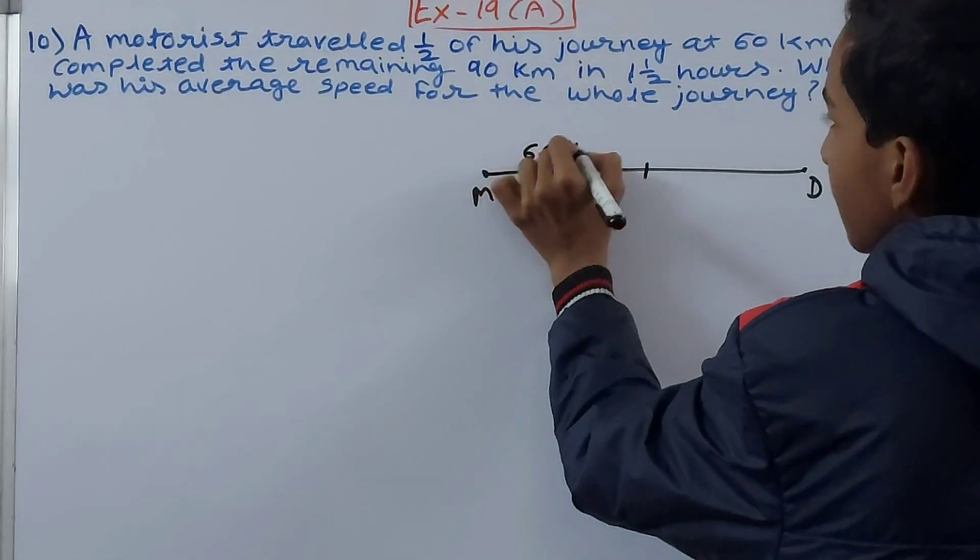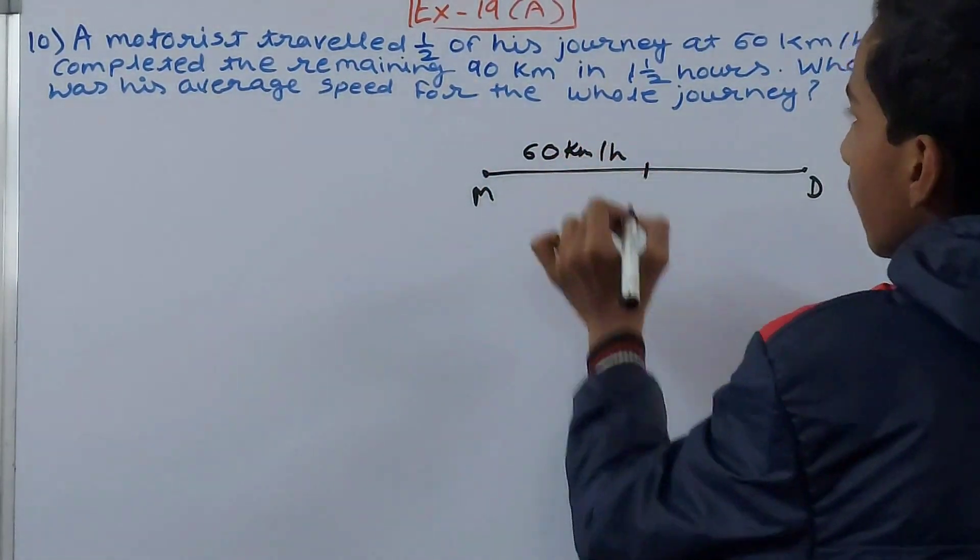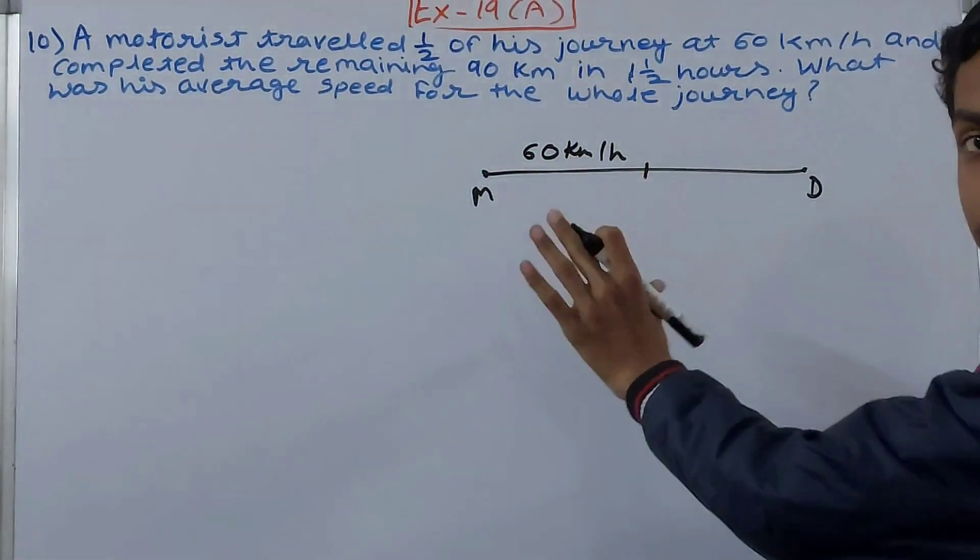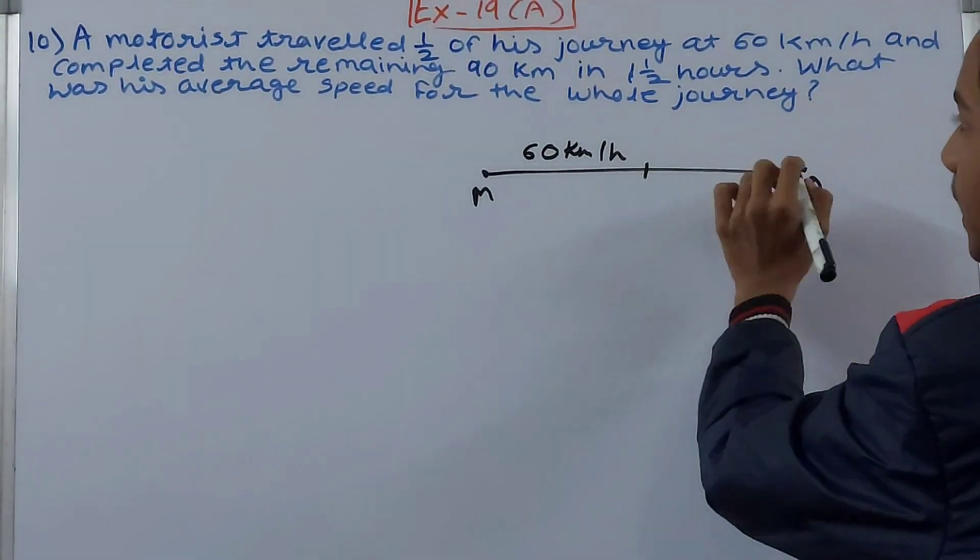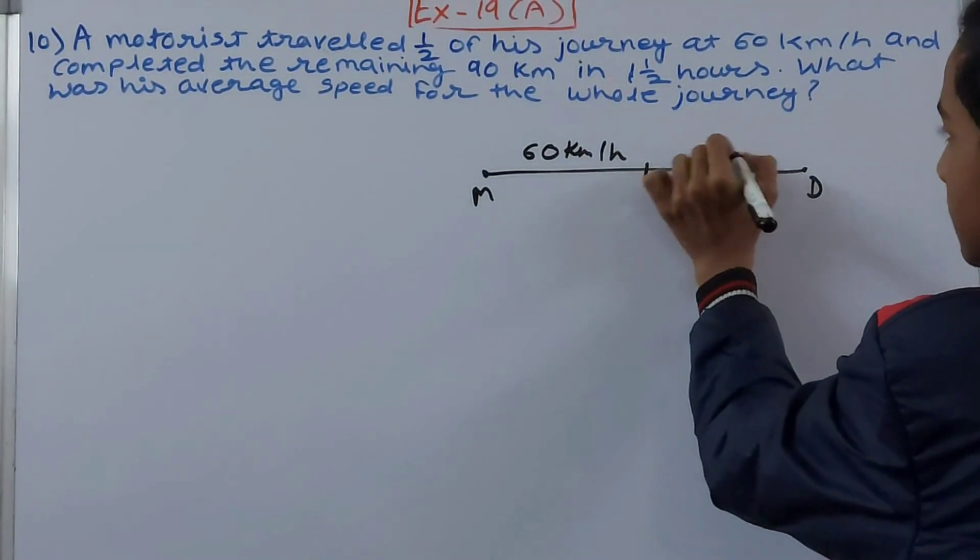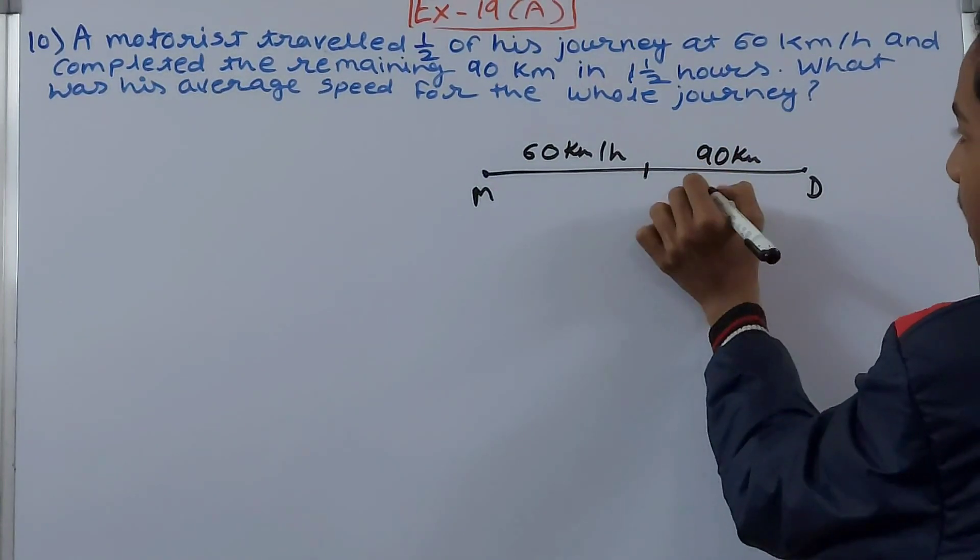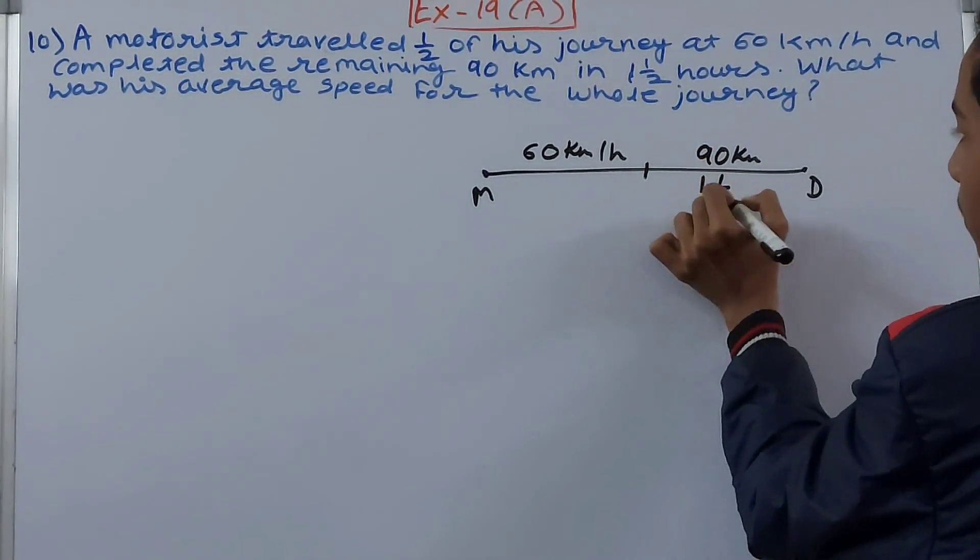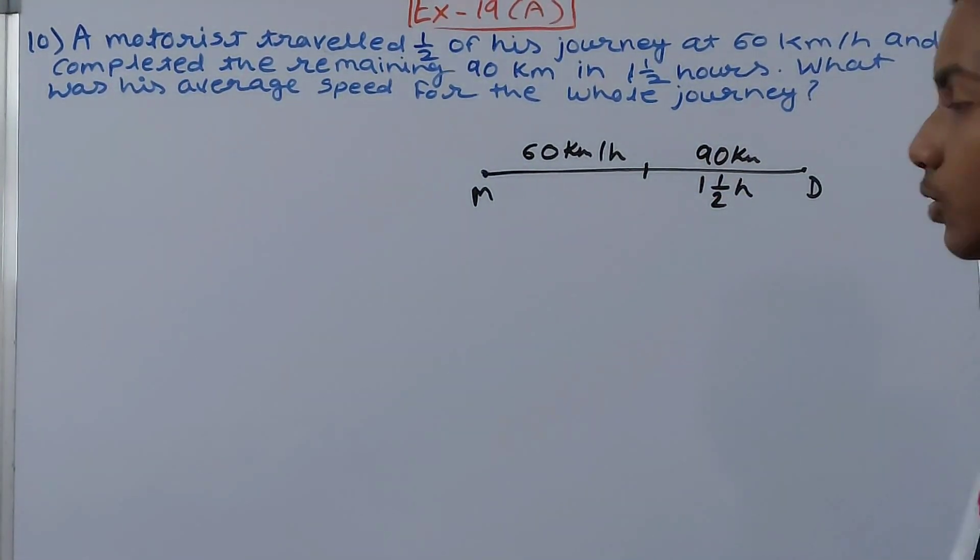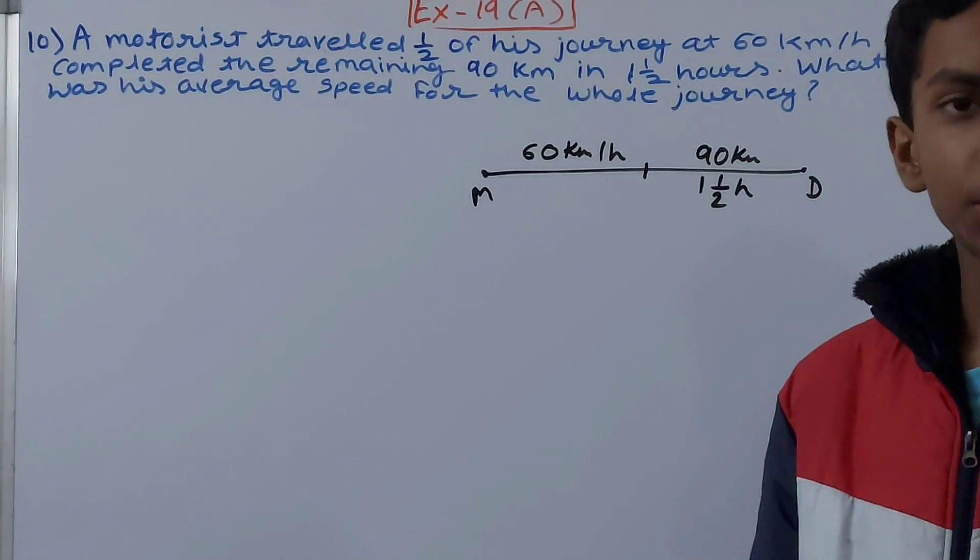One part, at this side, his speed is given - that is 60 kilometers per hour. This is one half. The second half, the speed isn't given but the distance is 90 kilometers and the time is one and a half hours.